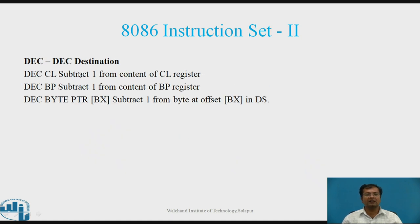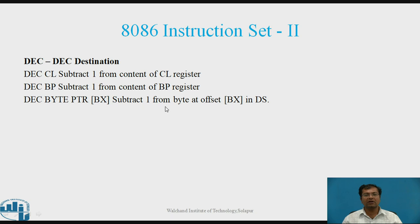Decrement. Syntax: DEC Destination. Example: DEC CL — subtracts 1 from contents of CL register. DEC BP — subtracts 1 from contents of BP register. DEC BYTE PTR [BX] — subtracts 1 from byte at offset BX in DS.